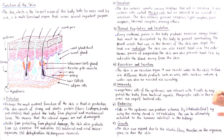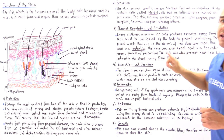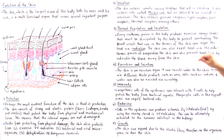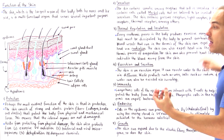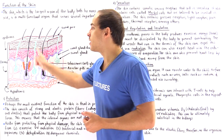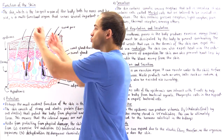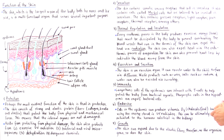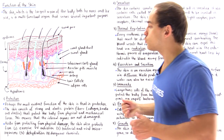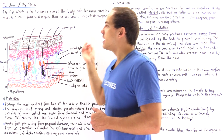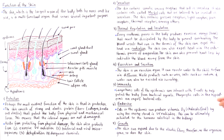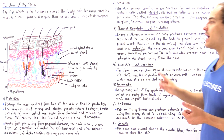Every exothermic process in the body produces excessive energy that must be dissipated to prevent overheating. Blood vessels in the dermis can expel heat via radiation, as this heat rises to the top portion of the skin. The skin can also expel heat via the endothermic process of evaporation: sweating takes place and the rising heat vaporizes that water, regulating the body's energy and temperature.